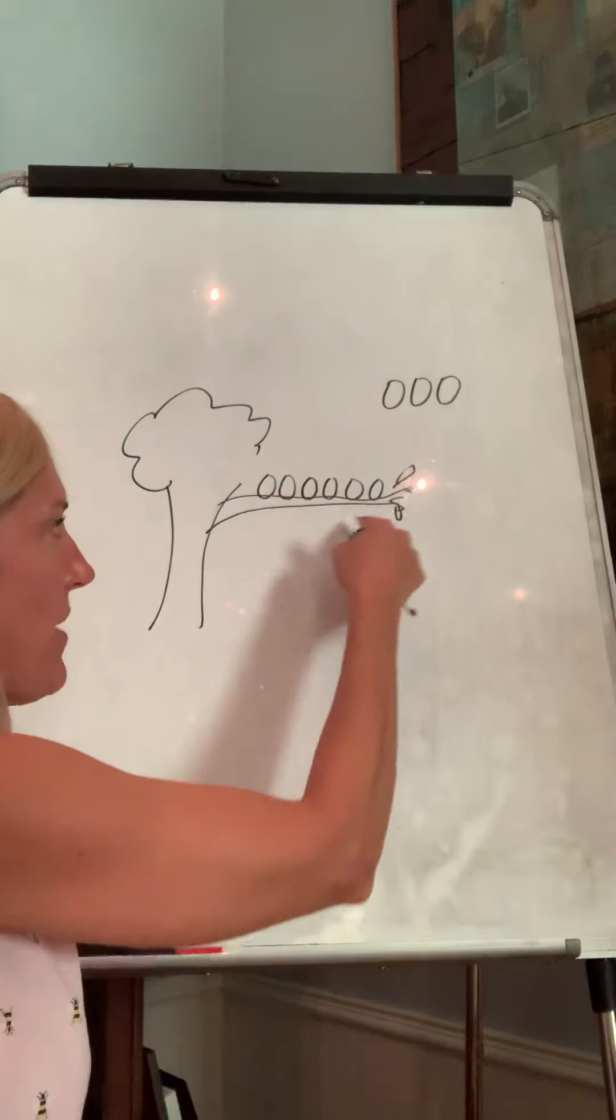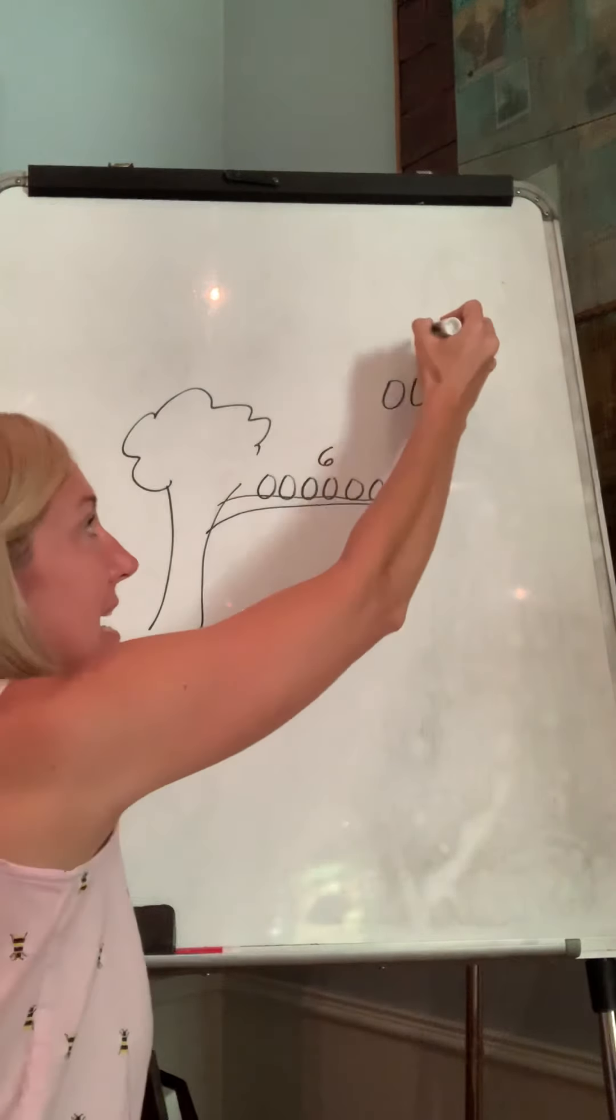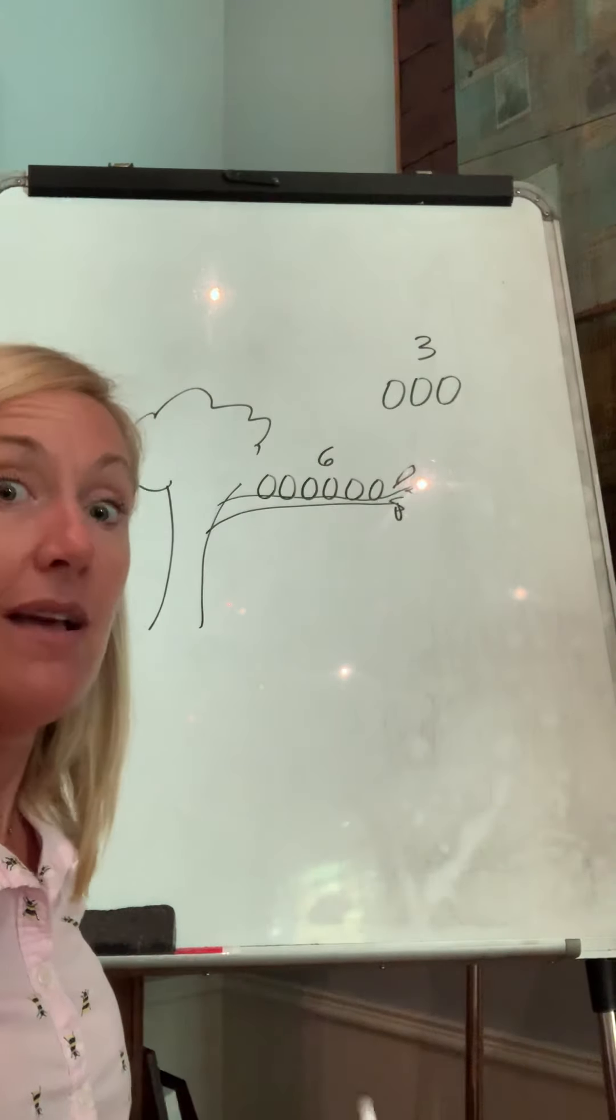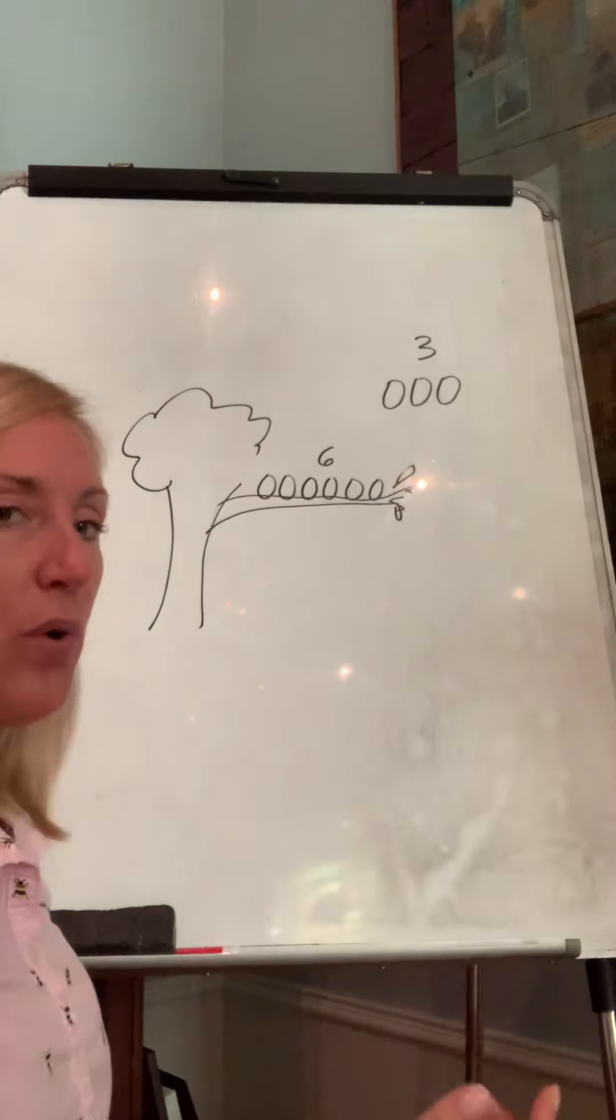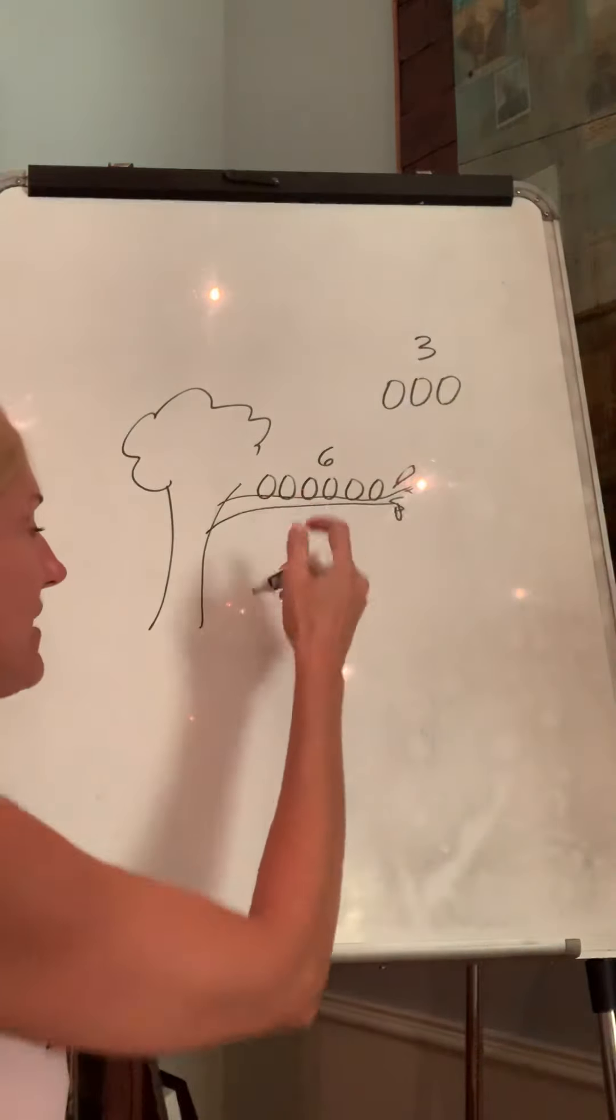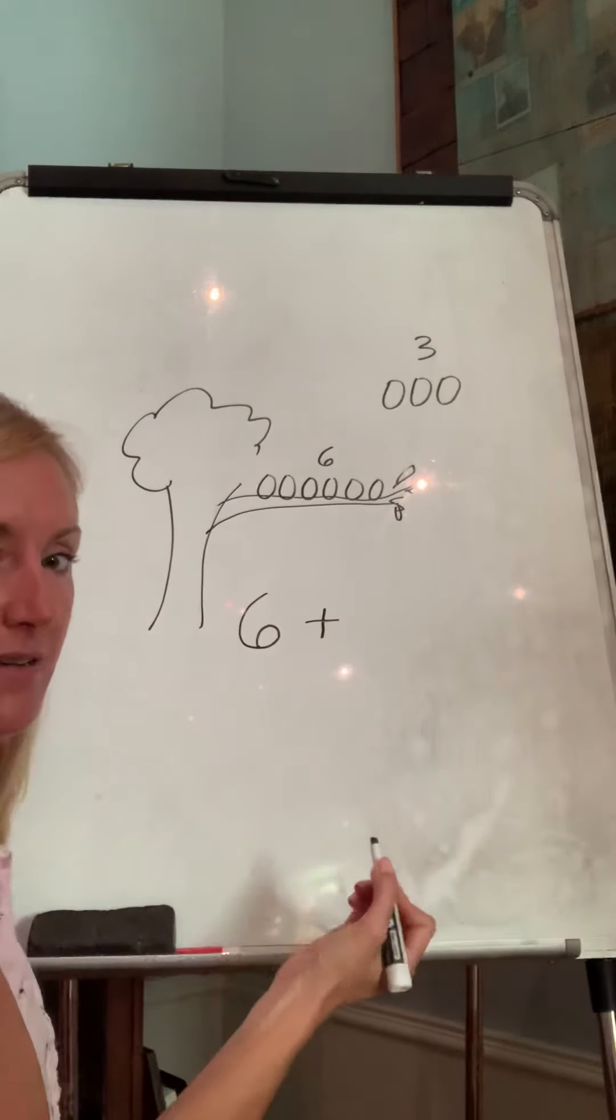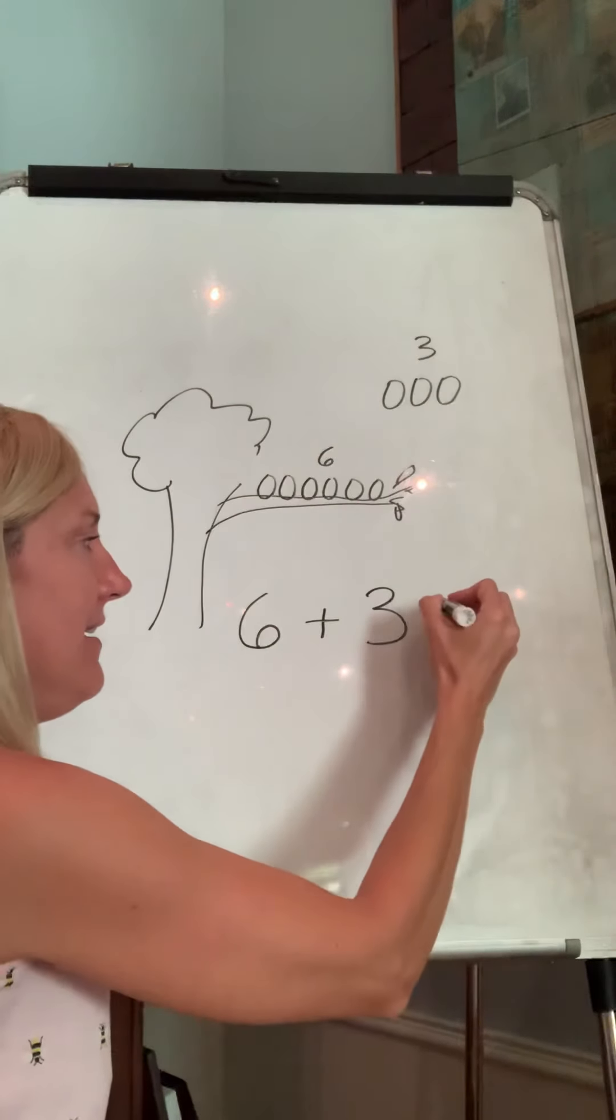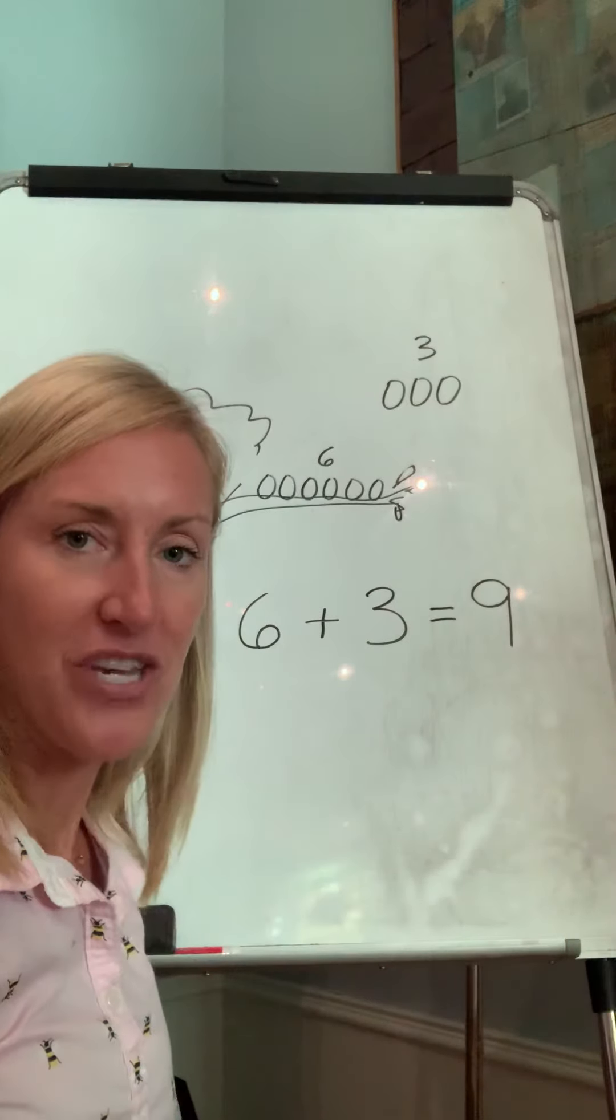There are the birds on the branch, we said that was six birds, and there are three up in the air. How many do we have all together? And I want you to write an equation. If you have your whiteboard, you can do that now. So if we're putting them together, that's going to be addition. So we're gonna have six birds on the branch, and plus three birds in the sky. That means we have nine birds all together.